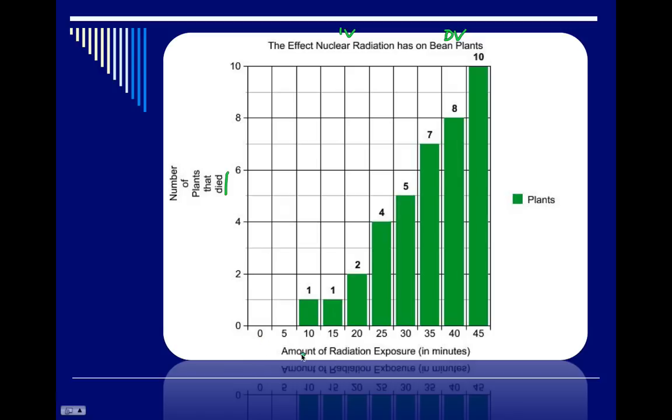So on the X axis then, we look at the amount of radiation exposure in minutes. And you can see in the various columns, we have 0, minutes 5, 10, 15, all the way up to 45. And as we reach 10 minutes of exposure, we start to see plants die.